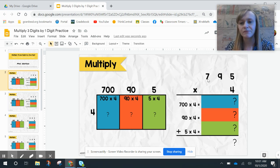Our first problem is 795 times 4. They've already created three boxes. There are three boxes because I have three digits in my first factor. Then I'm multiplying by 4, which goes over here on the side.